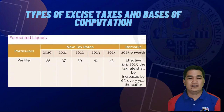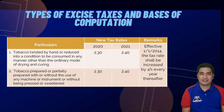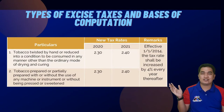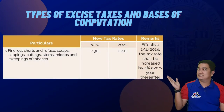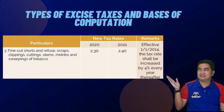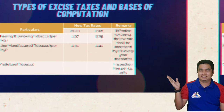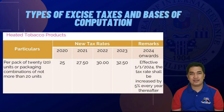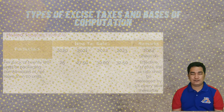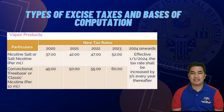For tobacco products, please refer to the table. Effective January 1, 2014, there is an increase of 4% per year. For heated tobacco products, per pack of 20 units or packaging combination of not more than 20 units, an excise tax of 25 pesos for year 2020, up to 32 pesos and 50 centavos for year 2023. Effective January 1, 2024, there is an increase of 5% every year thereafter.